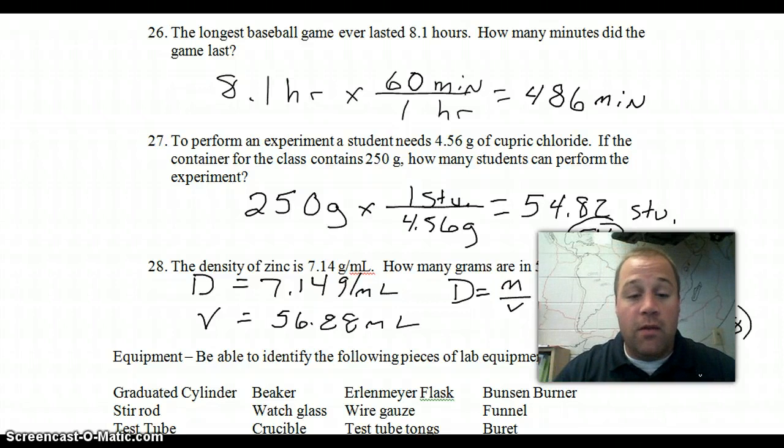The final thing that is on there is a list of lab equipment. Make sure you know how to do that. So, you have got the equipment review sheet right at the beginning of the marking period. Go back and look through there. Make sure that you know what each of those looks like. And, you should be all set for the test.